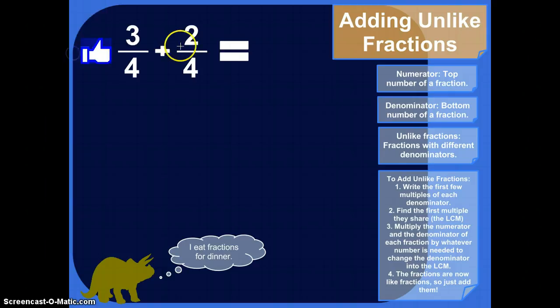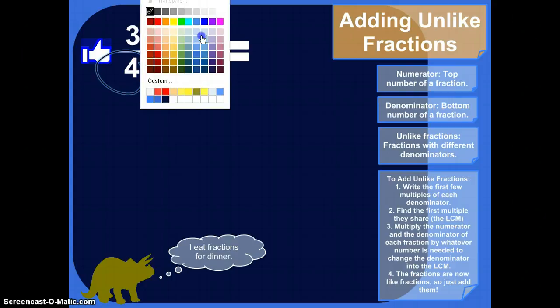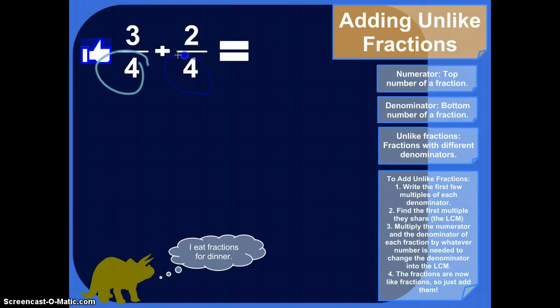We're going to keep the denominators the same. So the denominator is the bottom number of the fraction. What color do we want today? How about green? So these are the same, so our answer is going to have a denominator of four. That's nice. Does that look like a four to you?